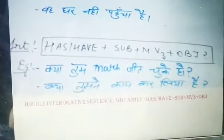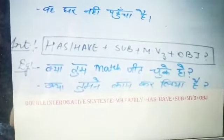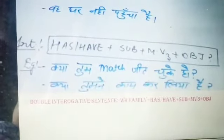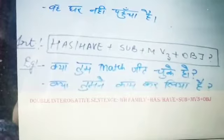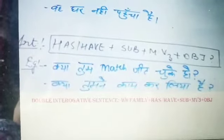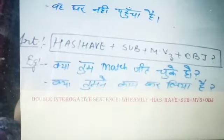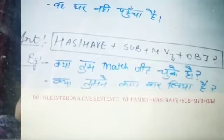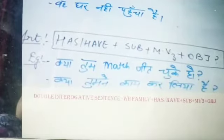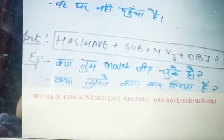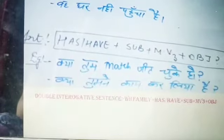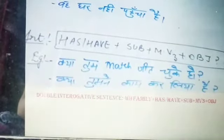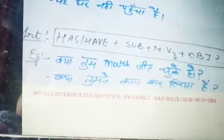Next, the Interrogative Sentence formula: the helping verb comes first, then subject, then verb's third form, then object — just as we have already done in Present Indefinite Tense. For example: 'क्या तुमने मैच जीत लिया है?' becomes 'Have you won the match?' — because the third form of 'win' is 'won'. Another example: 'क्या तुमने काम कर लिया है?' becomes 'Have you done the homework?' — because the third form of 'do' is 'done'. This completes our interrogative sentence.